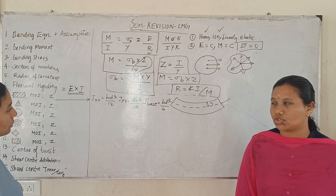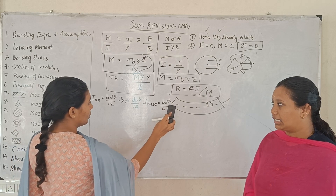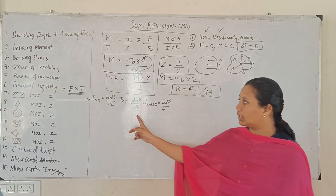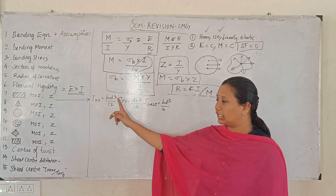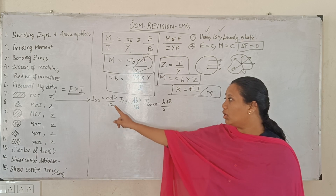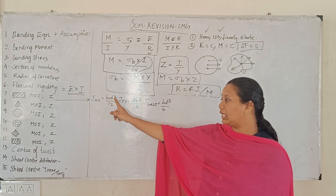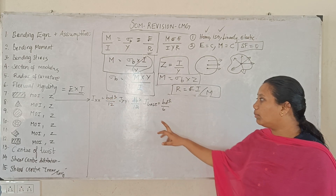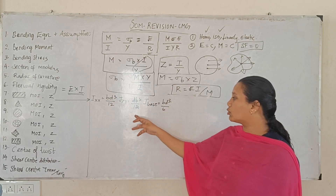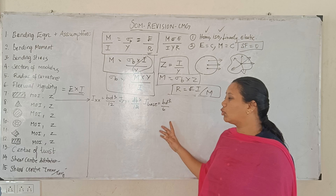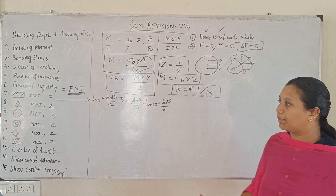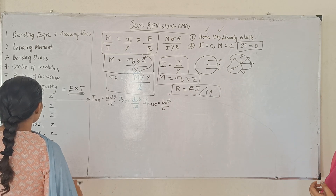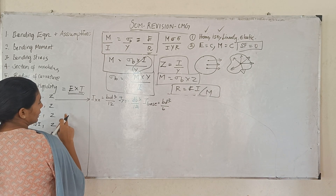About the y-y axis for a rectangle, with breadth b and depth d: I equals d·b³ divided by 12, and section modulus Z equals d·b² divided by 6.